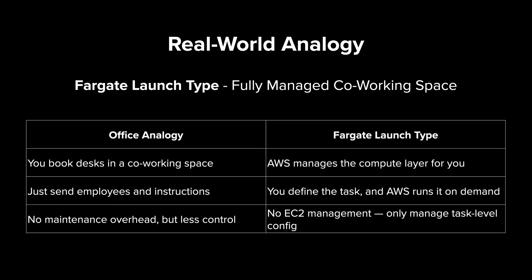With the Fargate launch type, imagine you don't want to own an office — instead, you rent desks in a fully managed co-working space, like WeWork. You just send in your employees with instructions and don't worry about electricity, cleaning, or IT. That's exactly how AWS Fargate works. You define what your container needs, and AWS handles the rest — provisioning compute, scaling, patching, and networking. It's a great choice when you want to focus only on your application, not on managing infrastructure. You can deploy the same web app, but this time you don't touch any EC2 instances — Fargate runs your containers for you.